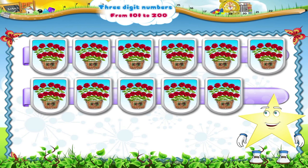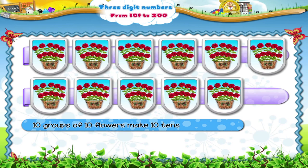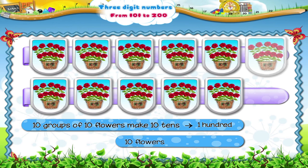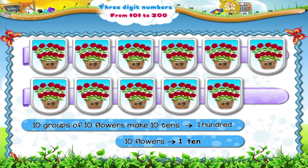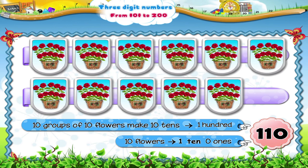Then, what number is formed? Let us see. Ten groups of ten flowers make ten tens. That is one hundred. Only one group of ten flowers is left. So we get one ten. After forming the groups, are there any more flowers left? No. So we get zero ones. Hence, the number formed is one hundred and ten.